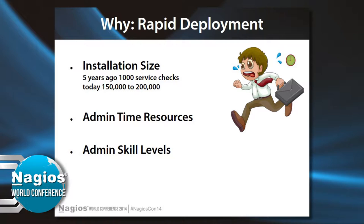The third element is trying to push these settings out in an efficient manner. It really comes back to a problem with size. Five years ago I was doing projects with 1,000 service checks. Currently I have one project with 150,000 and another with 200,000. Everything's getting bigger, and when you have 150,000 service checks, you can't implement this manually — it's just too big. And more importantly, you can't manage it efficiently if you install it incorrectly.